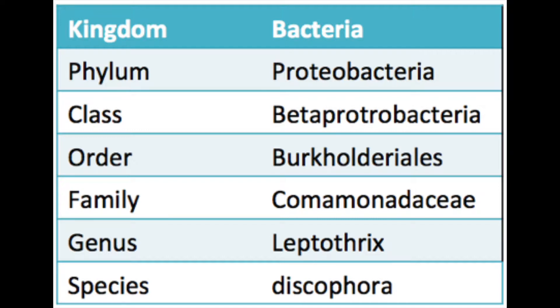Comamonadaceae, L. dyscophora's family, is known for containing rod-shaped aerobic organisms. An example of this is Malichia spinosa, an aerobic, rod-shaped bacterium commonly found in soil.